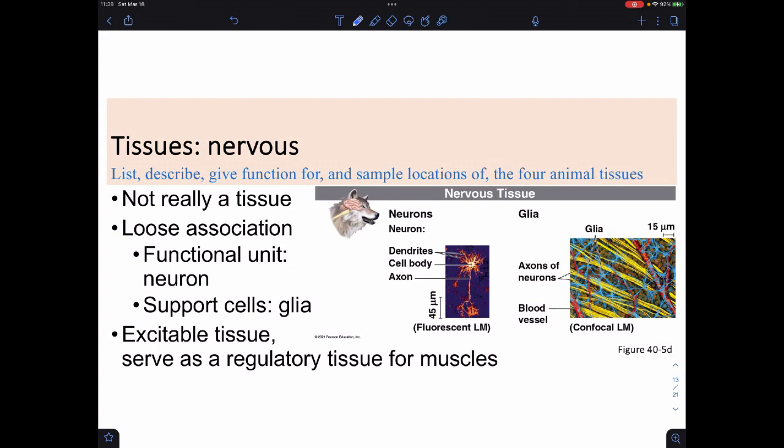The last group is what we call the nervous tissues. And it's not really a tissue, because it's more like a loose association of cells. The main cell that we deal with there is the neuron. And then it has support cells that we call glial cells. It is also an excitable tissue. And it usually serves as the regulator for muscles.